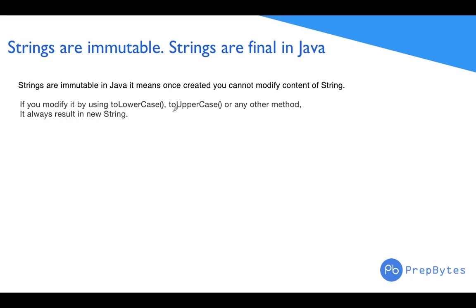Let's talk about a very important thing about strings. Strings are final in Java and hence are immutable. If we make any variable final, that means we cannot change the content of that particular variable in our code. So if strings are immutable, it means that once created, you cannot modify the content of a string.